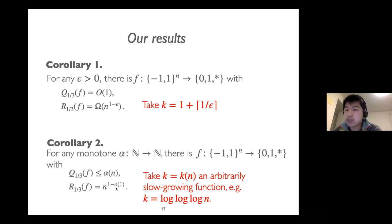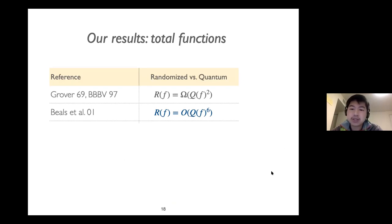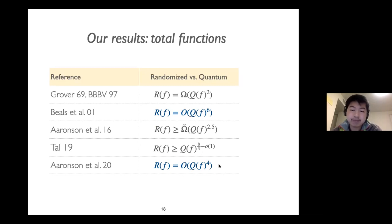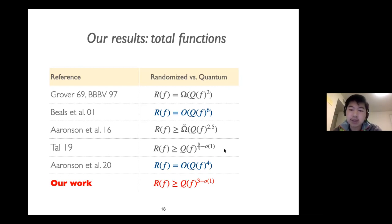All these results are with respect to partial functions. For total functions, it is well known that the two measures are polynomially related. Prior to our work, the largest separation was given by Tal, who showed a function whose randomized query complexity is at least its quantum query complexity raised to the power 8/3. In our work, we improve Tal's result by a polynomial factor, showing a cubic separation between randomized and quantum query complexity for some functions.